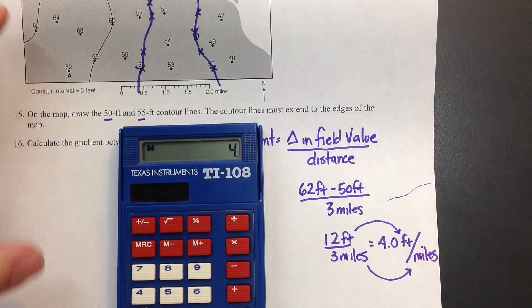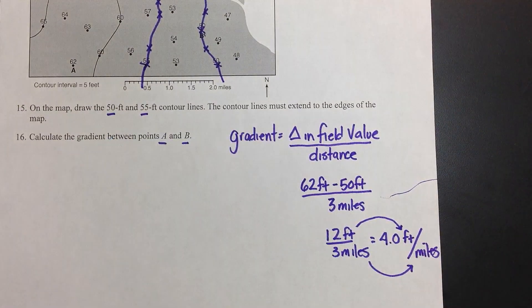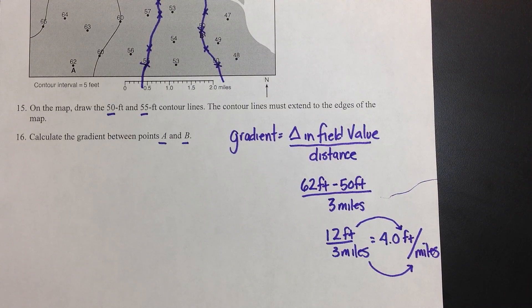So 4 feet per mile. So every mile that you travel, your elevation is going to change about 4 feet on that map.